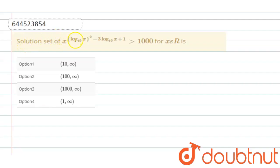Solution set of x^((log₁₀x)² - 3log₁₀x + 1) > 1000, for x belongs to R. This is the question given that...